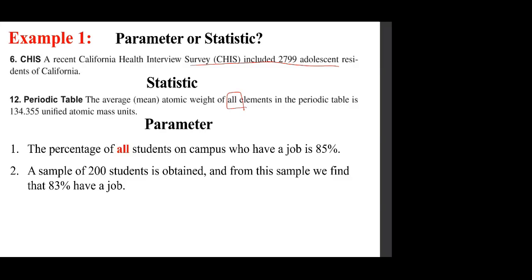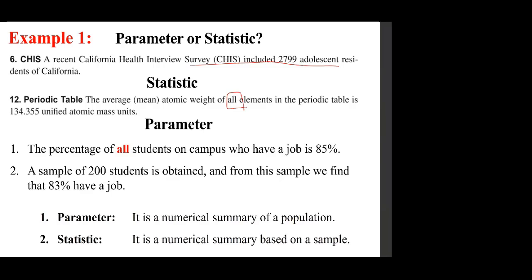The percentage of all students on campus who have a job is 85% — that's a parameter. A sample of 200 students is obtained, and from this sample 83% have a job — that's a statistic. You have to read the question carefully; the word 'all' may not be explicit but could be implicit.